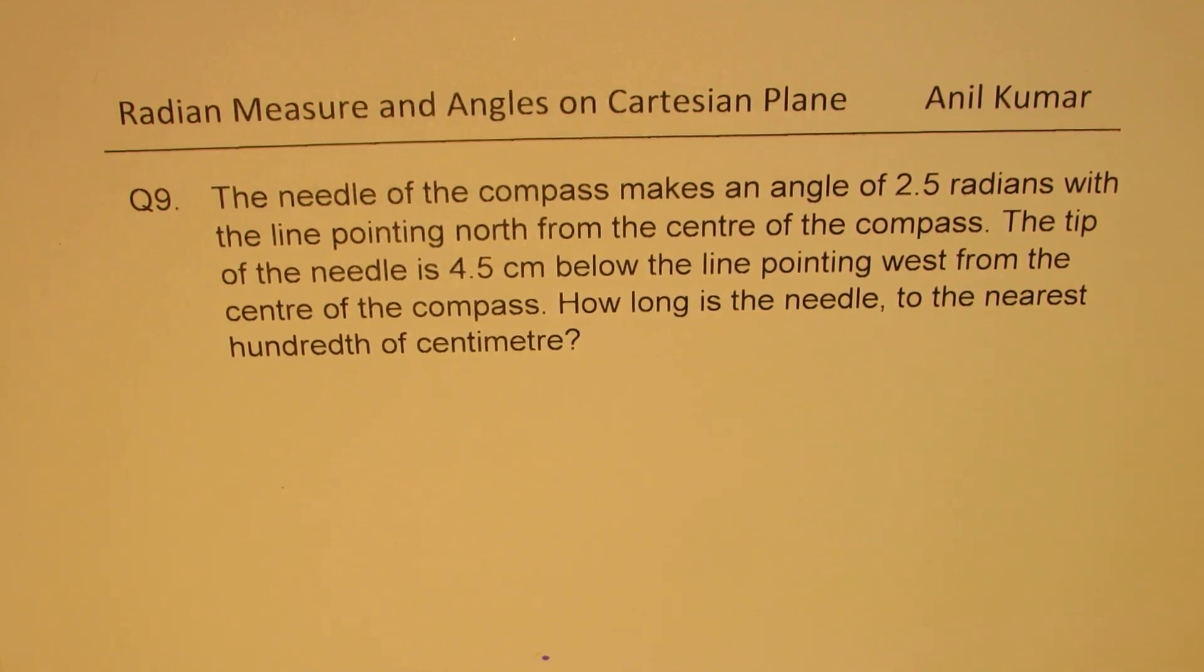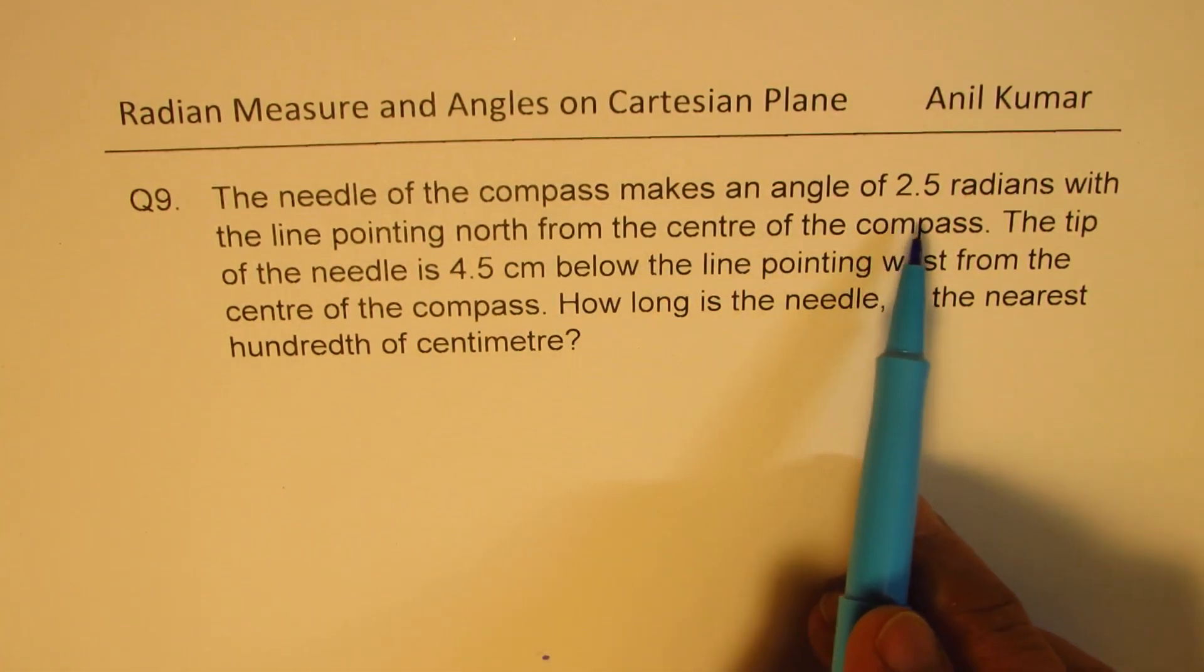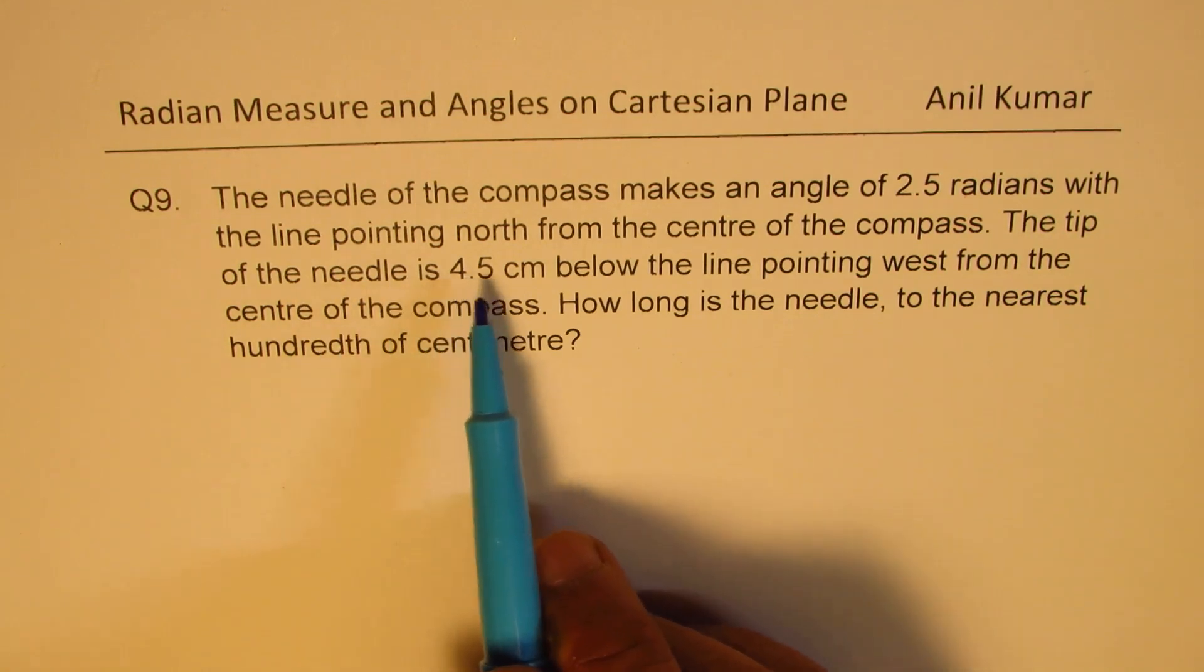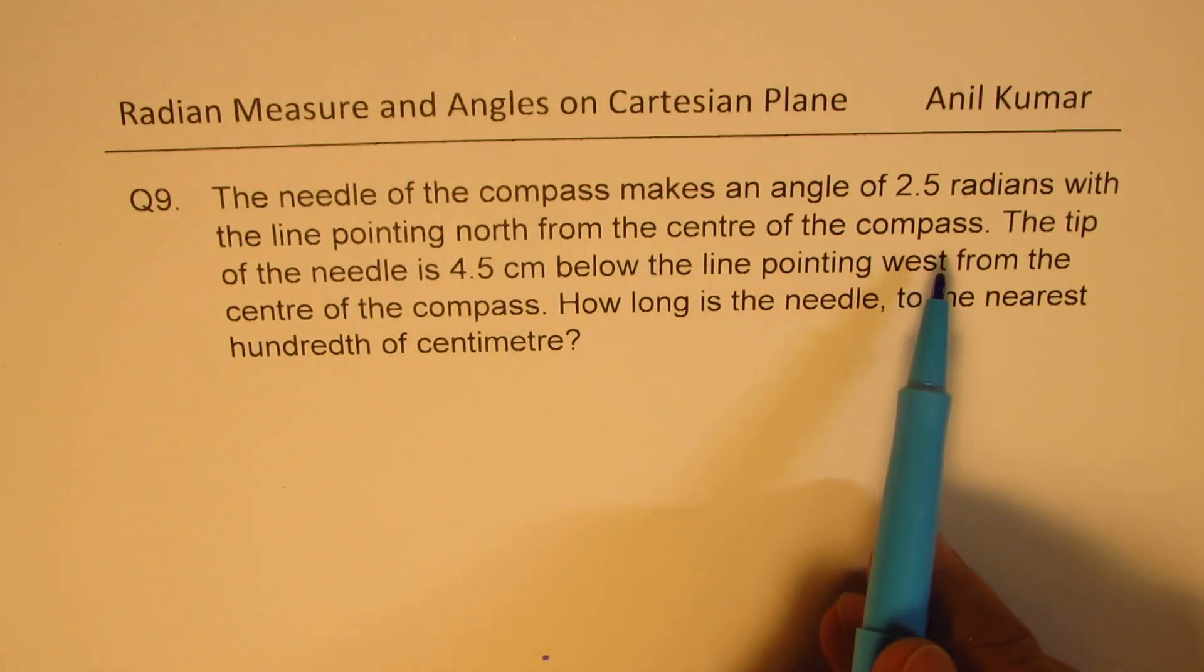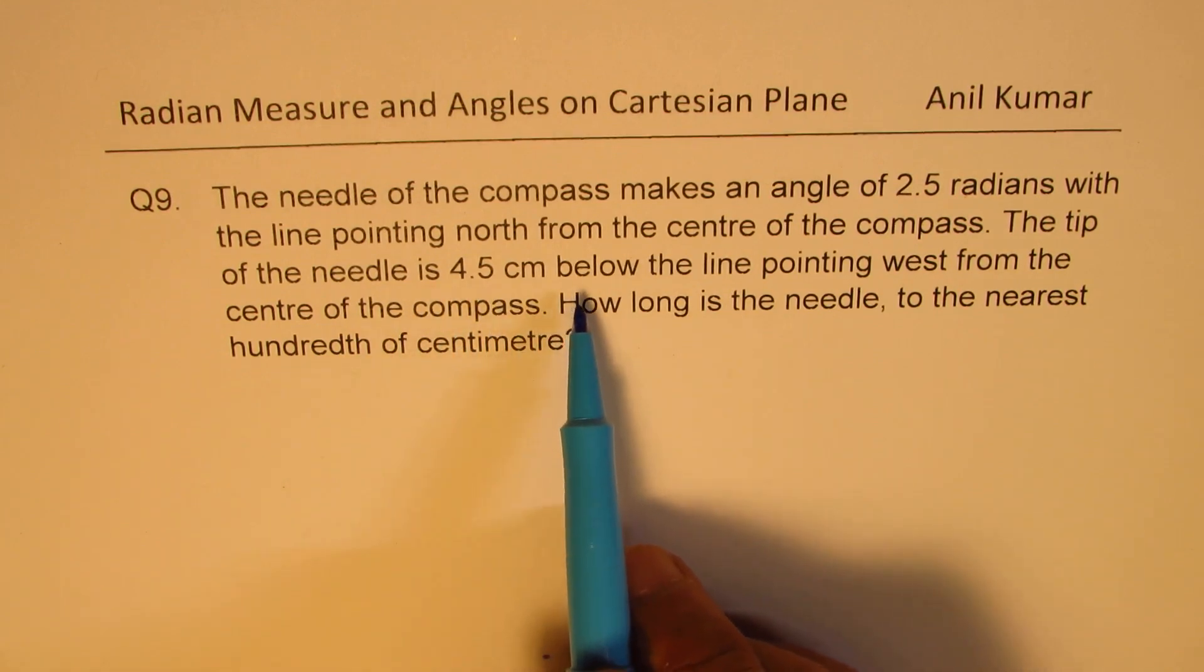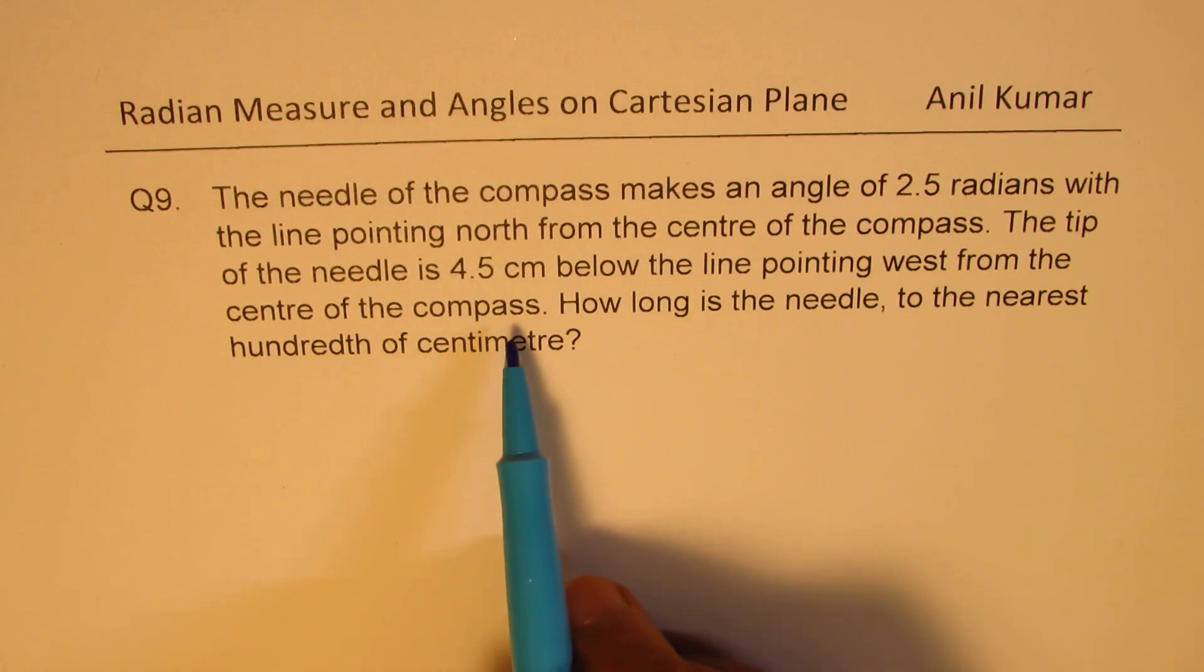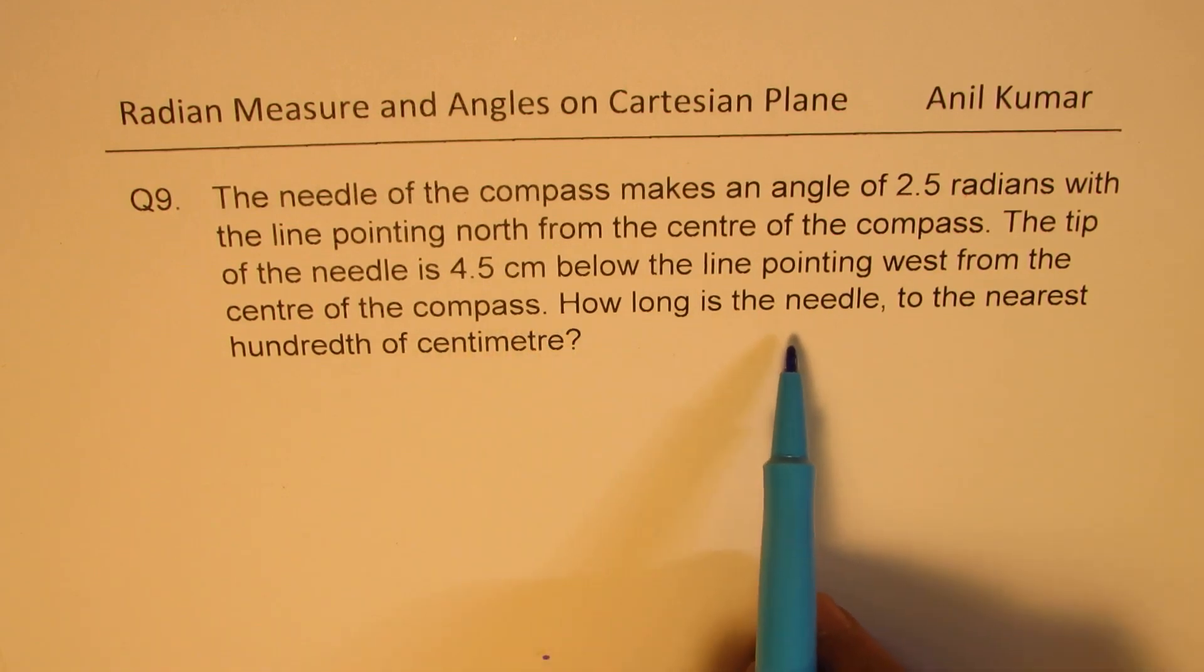Question number nine: The needle of the compass makes an angle of 2.5 radians with the line pointing north from the center of the compass. The tip of the needle is 4.5 centimeters below the line pointing west from the center of the compass. How long is the needle to the nearest hundredth of centimeters?